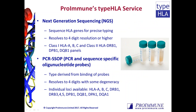Proimmune offers a straightforward and dependable tissue typing service using the most up-to-date genotyping technologies. Next Generation Sequencing directly sequences the HLA genes to provide HLA type to four-digit allelic level or better, and this is available as a class 1 panel incorporating HLA-A, B and C, and a class 2 panel incorporating HLA-DRB1, DPB1 and DQB1 — both panels can be ordered together.